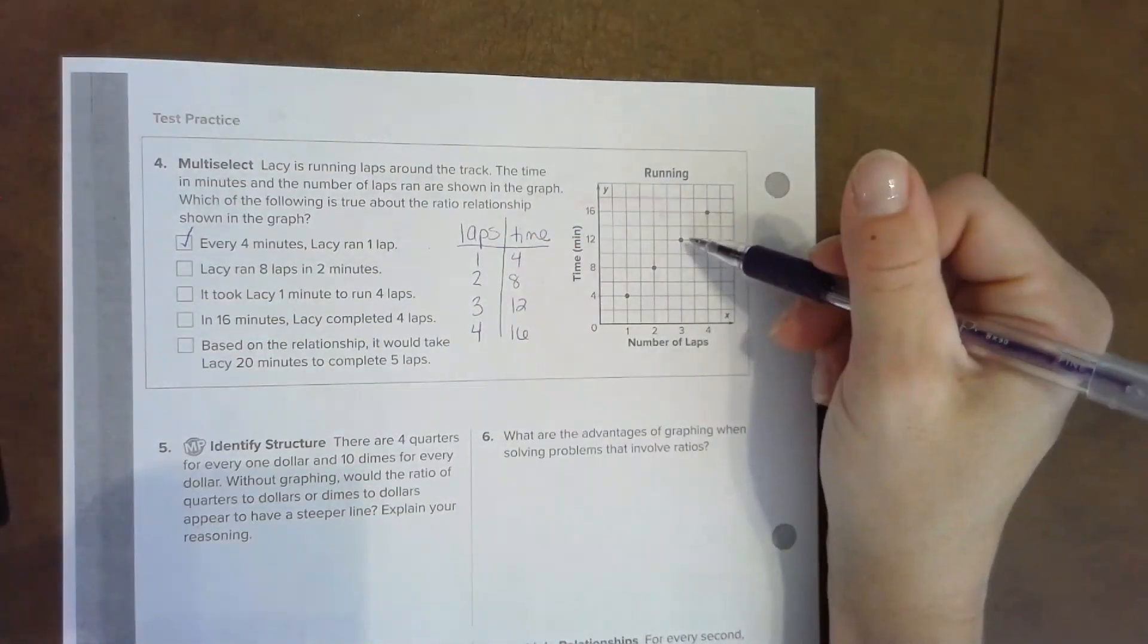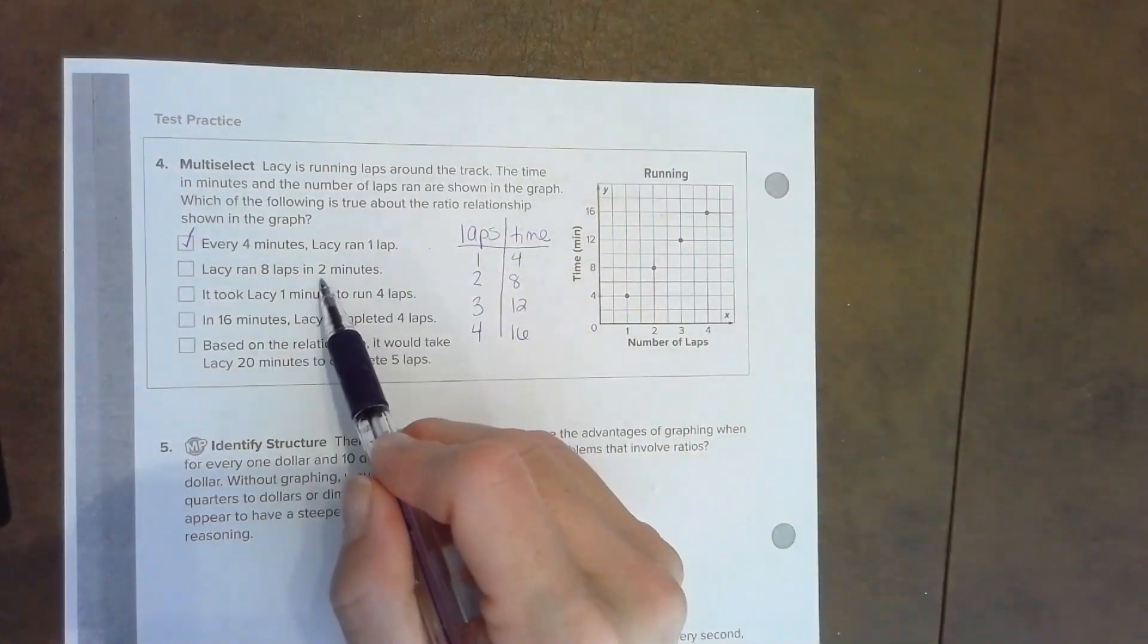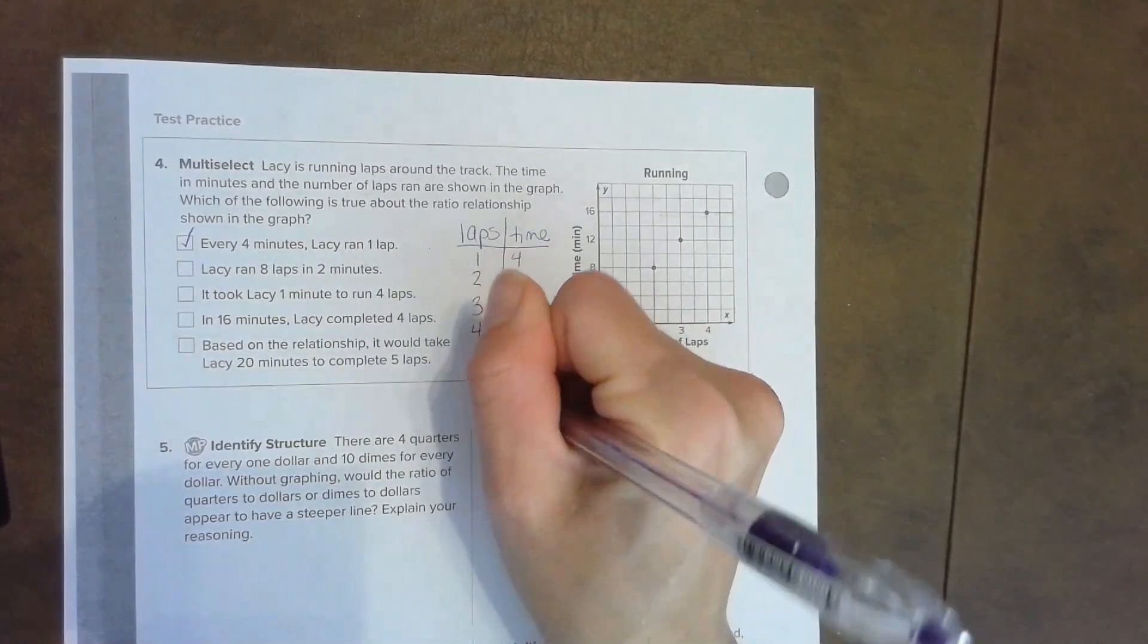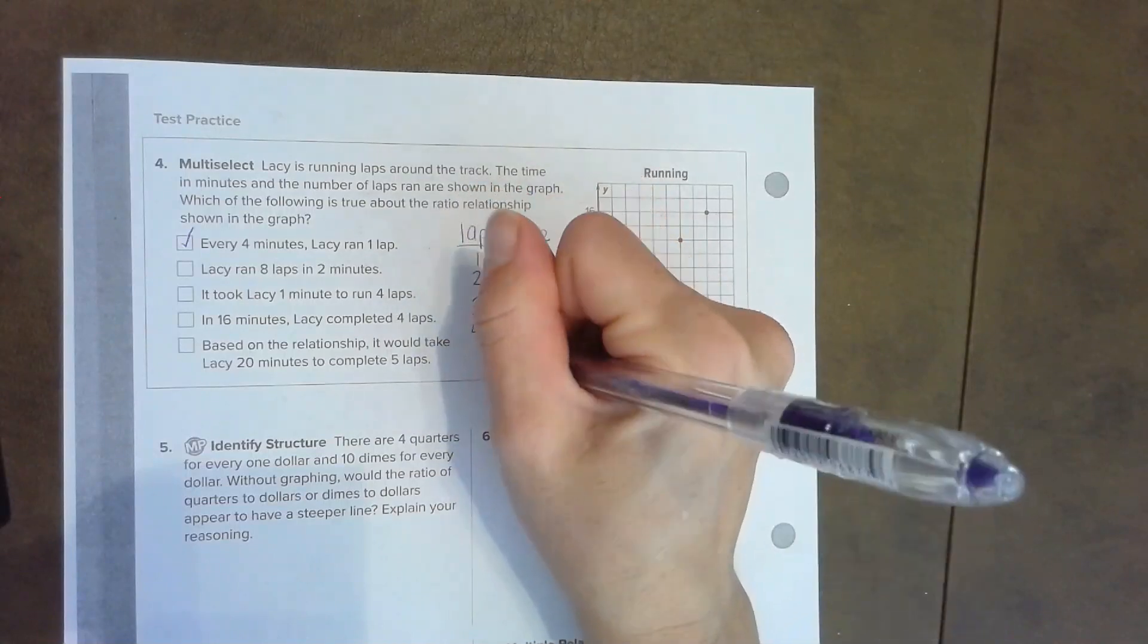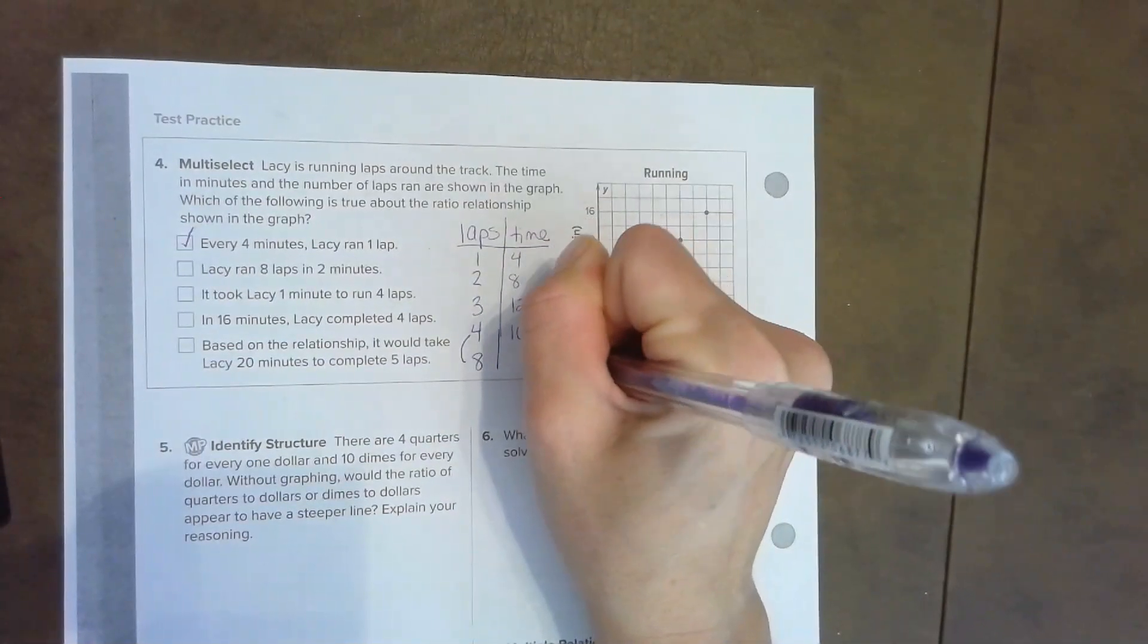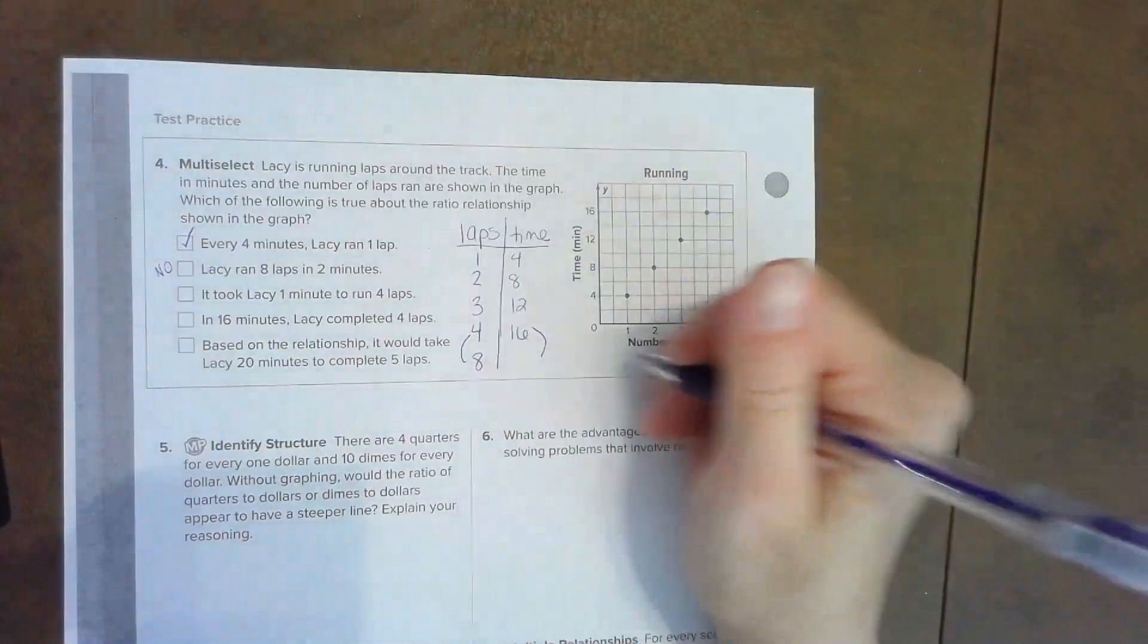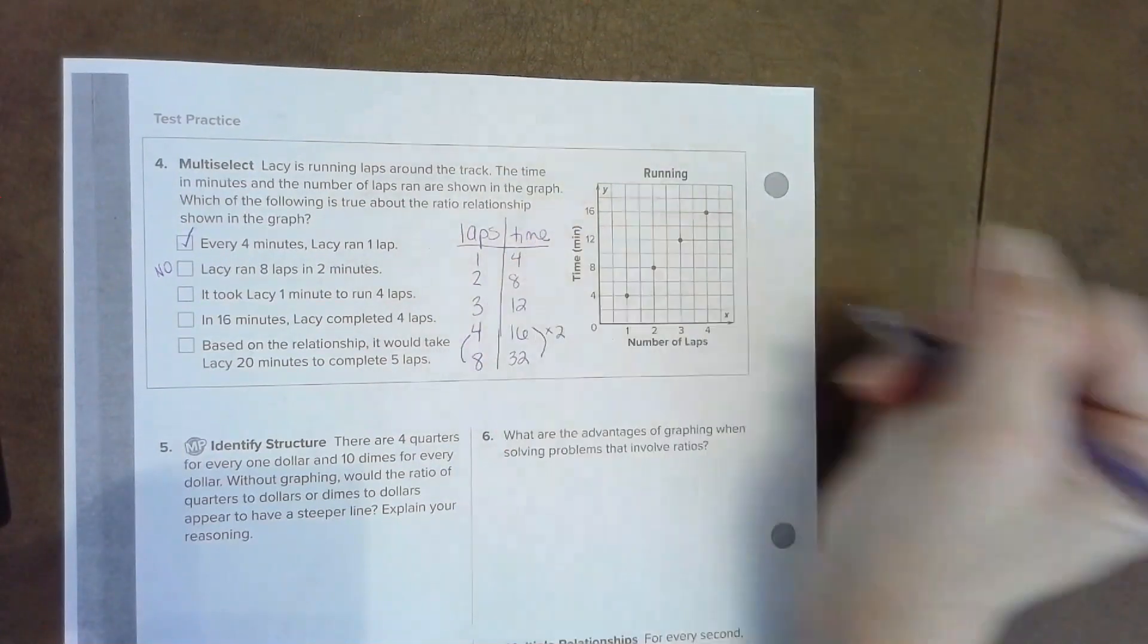Sometimes a graph is quicker and other times a table is quicker. Lacey ran eight laps in two minutes. Well, if I look at eight laps, I would have to extend my table, so I'm going to extend it to here. To go from four laps to eight laps, it's twice the amount, and already right here it says 16, so I know this is going to be a no. But I'm just showing you that if I double this, it's actually going to take 32 minutes.